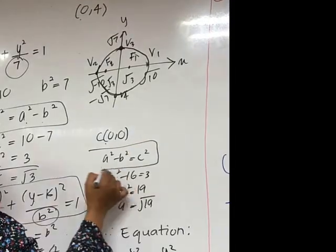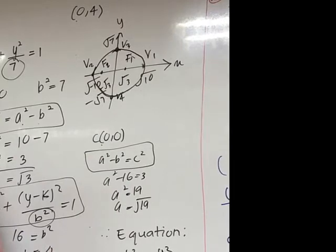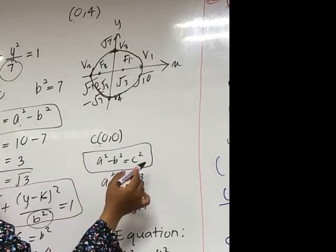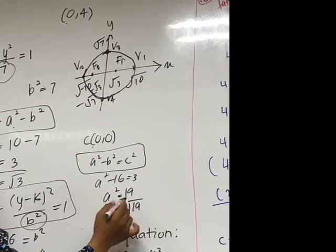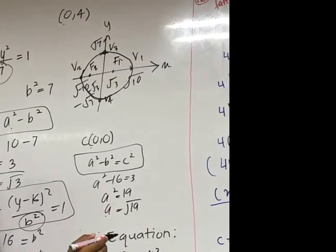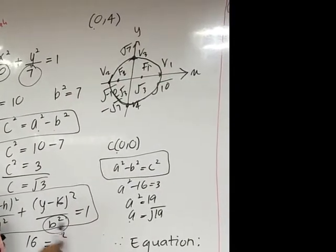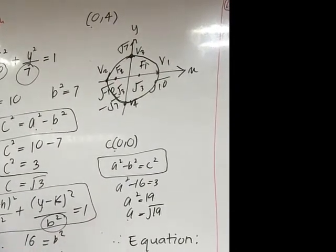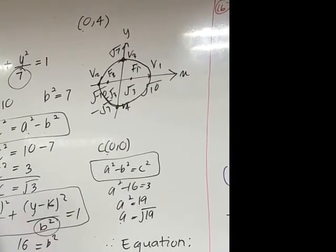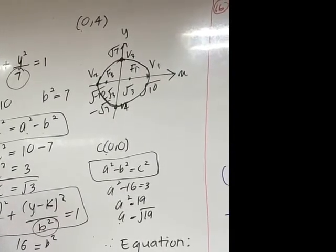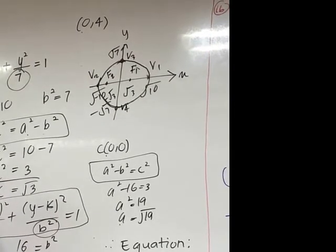Then we put into this formula. We put b in, then we put C in. So we get A = √19. Then the equation, we use this equation. So its center is (0, 0). So we get x²/19 + y²/16 = 1.